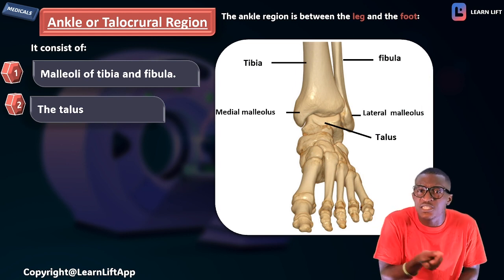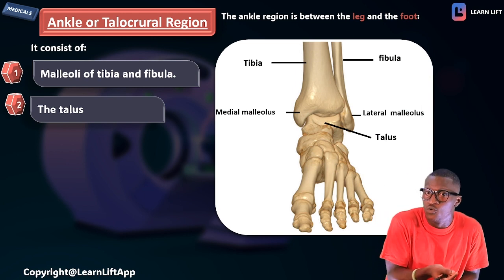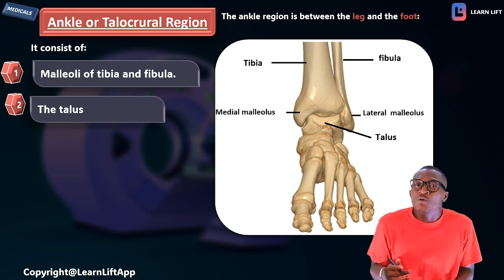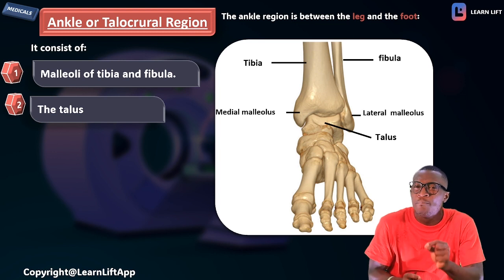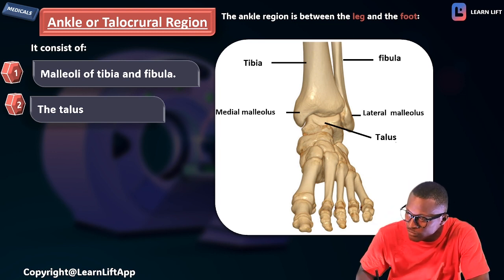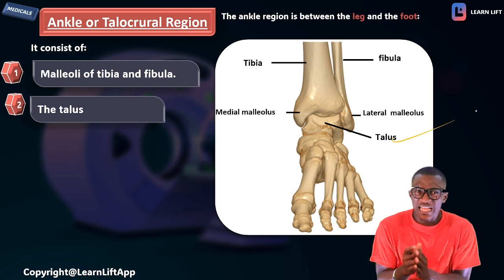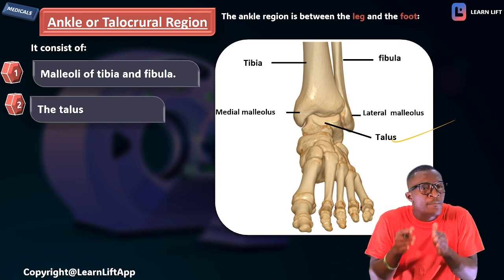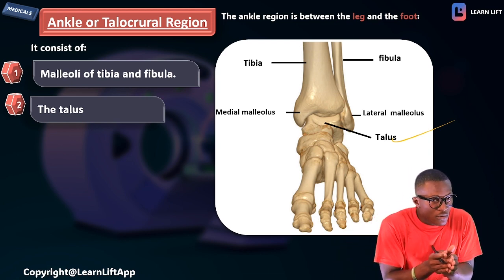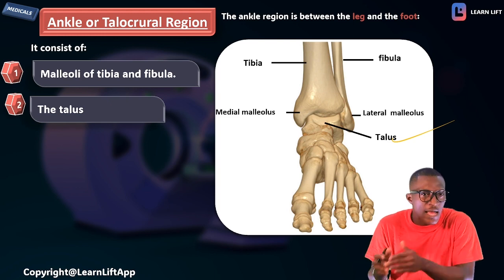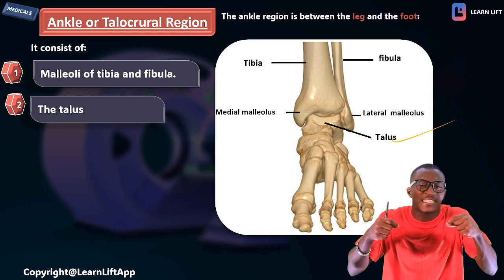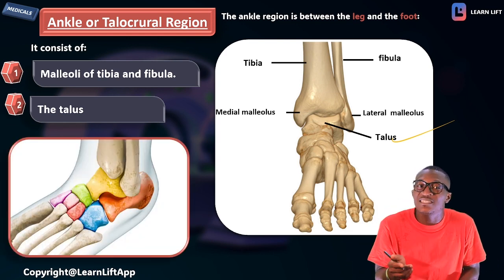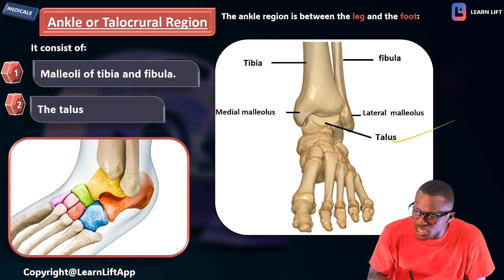You can see the tibia, the fibula, the medial malleolus, and the lateral malleolus. Take note that the tibia and the fibula are sitting on a bone of the foot called the talus bone. That is how the ankle region is formed: the malleoli of the tibia and fibula, as well as the talus bone.